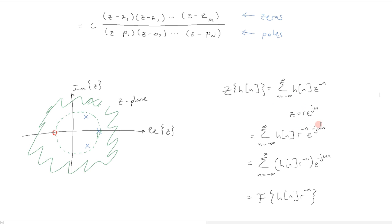Here we have the equation formulation of the z-transform, where we can see how it's related to the discrete time Fourier transform of h of n by first pre-multiplying by r to the minus n.